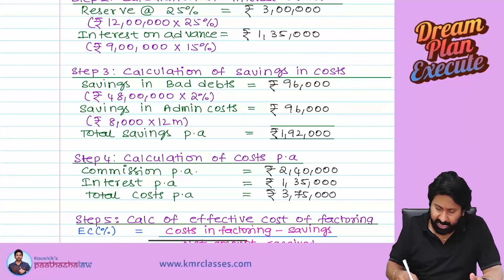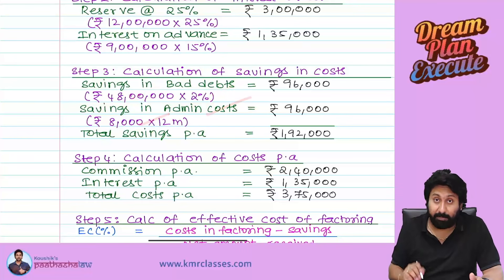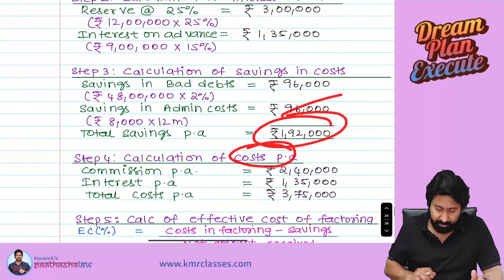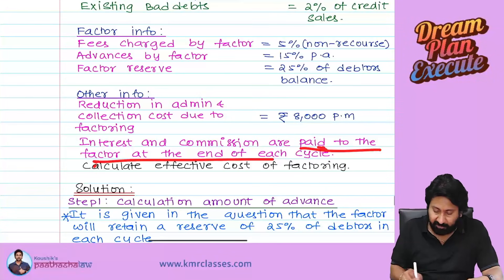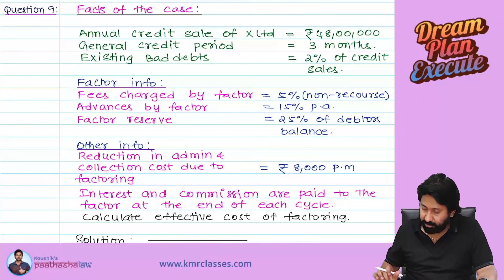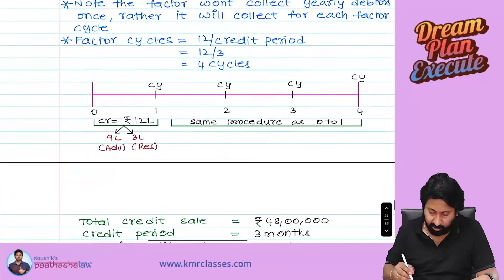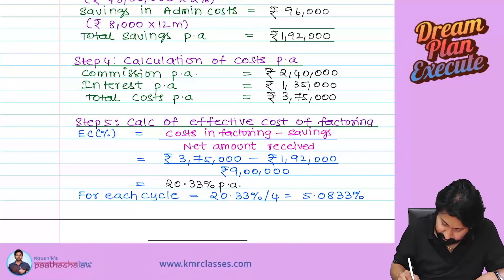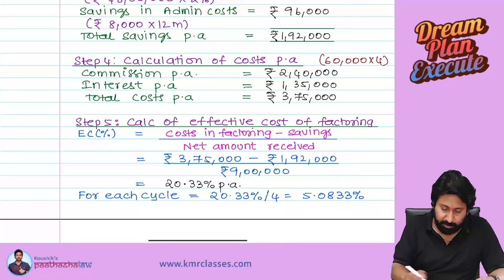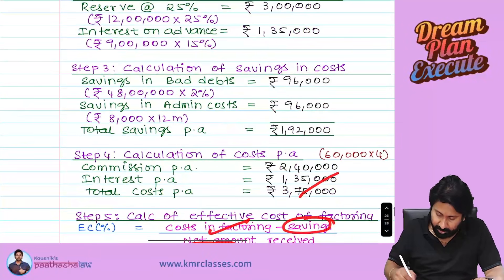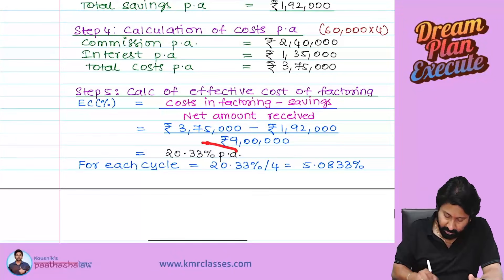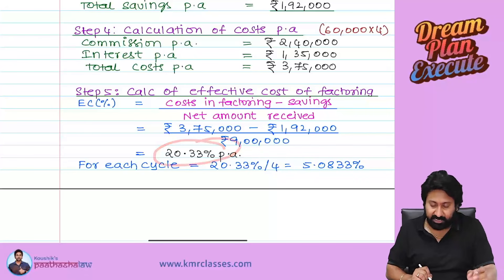Savings: bad debt saving = 96,000; admin cost saving = 8,000 per month × 12 = 96,000; total savings = 1,92,000. Total cost per annum = commission 2,40,000 + interest 1,35,000 = 3,75,000. Effective cost of factoring = (Cost of factoring − Savings) ÷ Net amount received = (3,75,000 − 1,92,000) ÷ 9,00,000 = approximately 20.33% per annum (5.0833% per cycle).